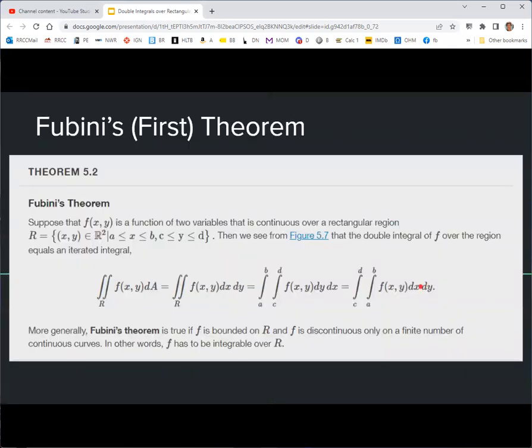Fubini's theorem, which is theorem 5.2 here, says that if f is continuous, then the two iterative integrals doing y first and x or x first and y should give you the same result. Now it's proven easily when f is continuous, but it's actually true as long as f is bounded and continuous everywhere except a finite number of continuous curves.